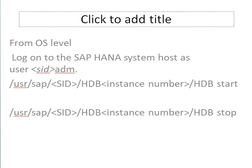Again from the OS level, login as sidadm. Go to the path /usr/sap/<SID>/HDB<instance-number>. Execute the command hdb start.